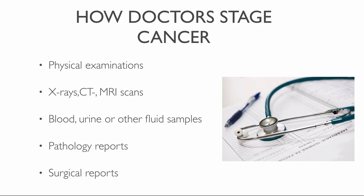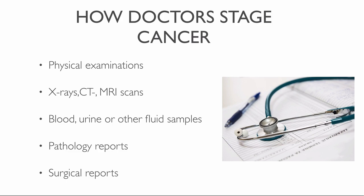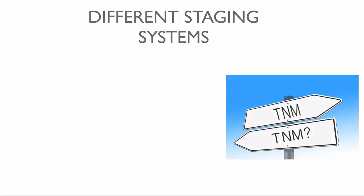Now let's explain how oncologists create different stages of cancer using the TNM system. There are different types of staging systems, but the most common and useful one for most types of cancer is the TNM system, which describes cancers that form solid tumors such as breast, colon, or lung cancers.